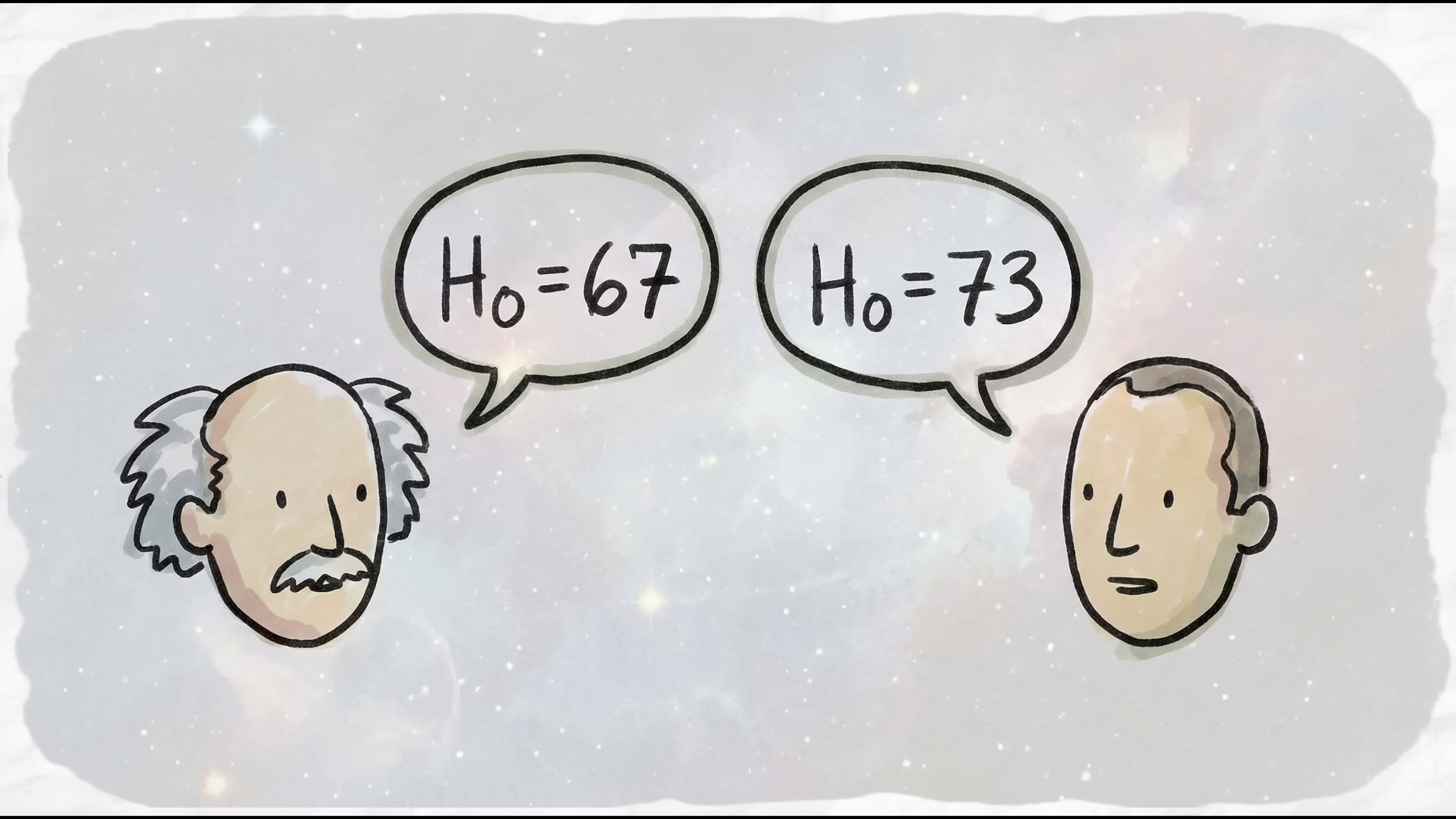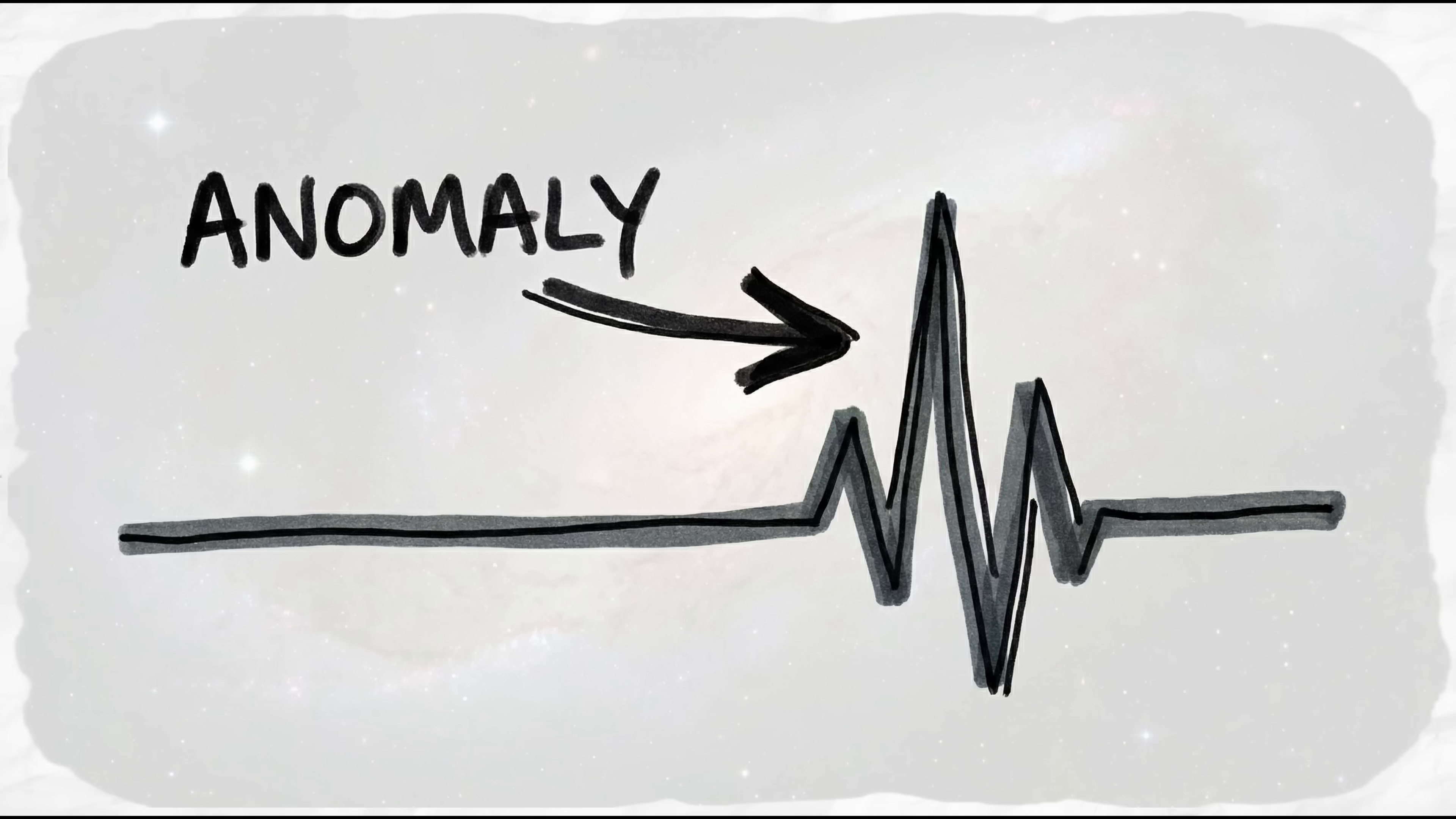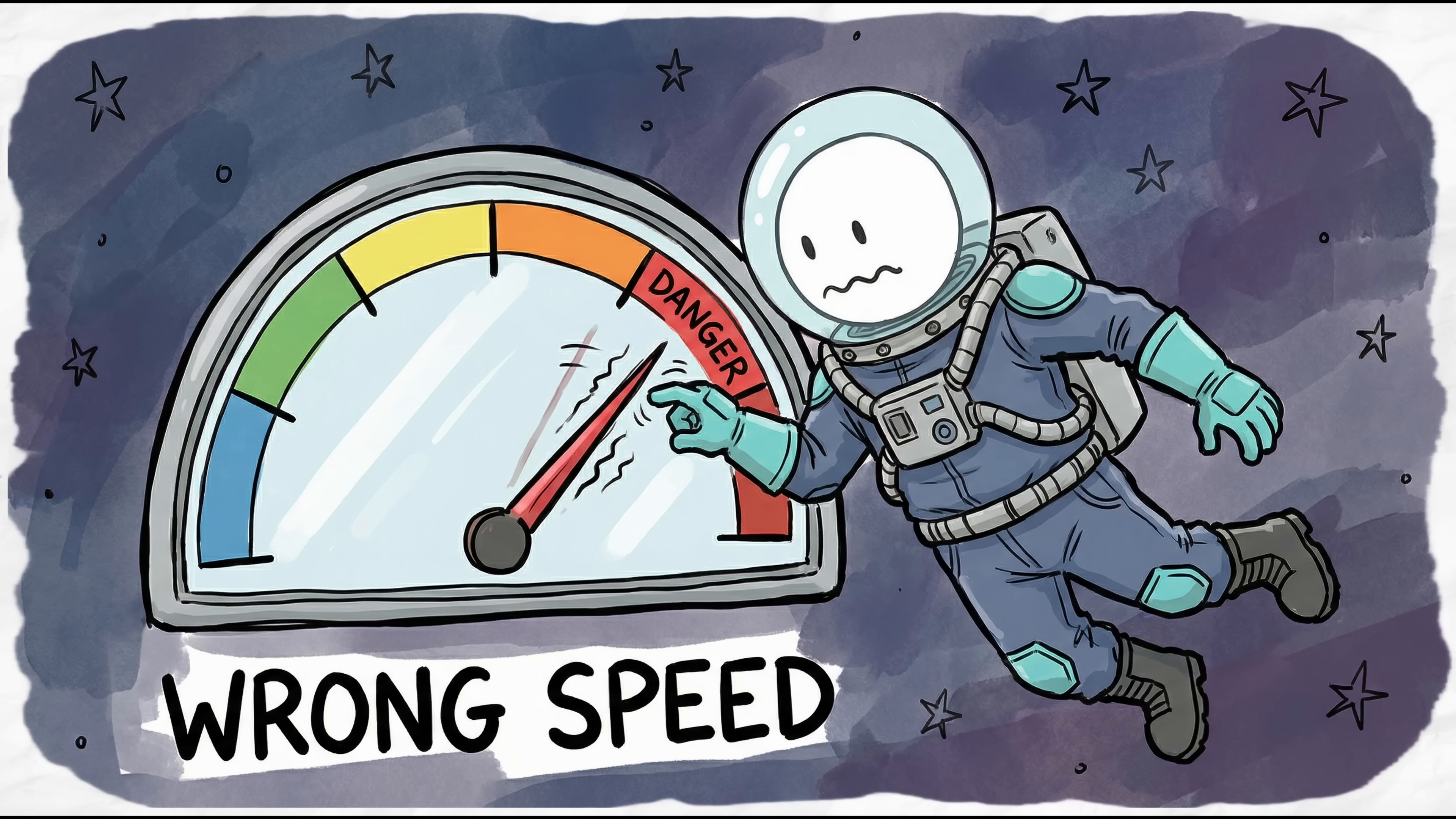Some astrophysicists argue this local void could be the missing link in the Hubble tension. This is a local anomaly that makes the expansion of the distant universe look like it's running at the wrong speed.